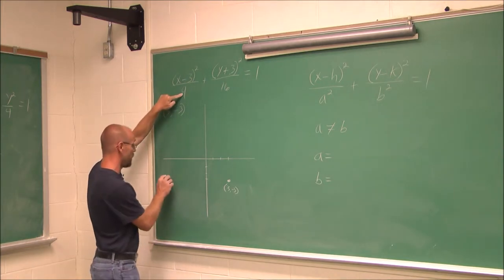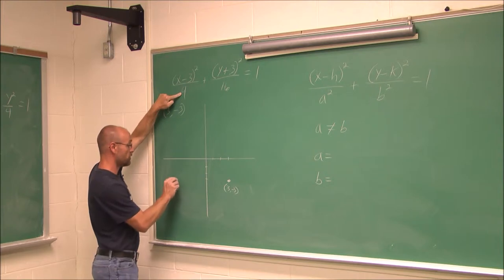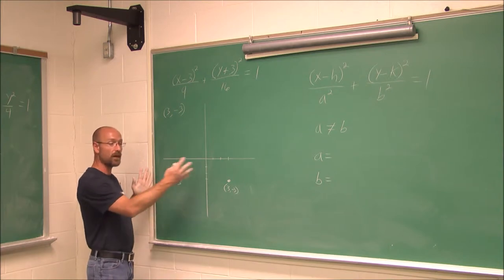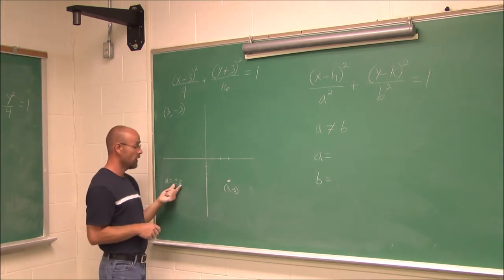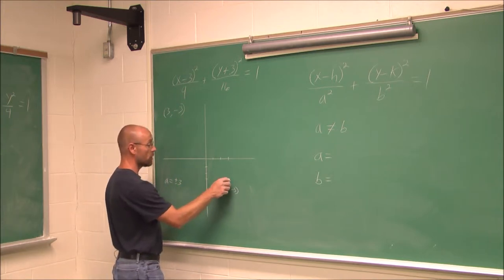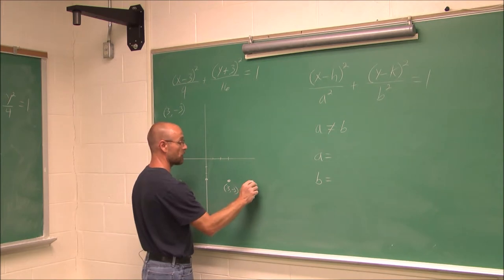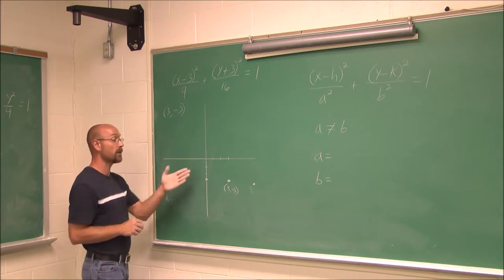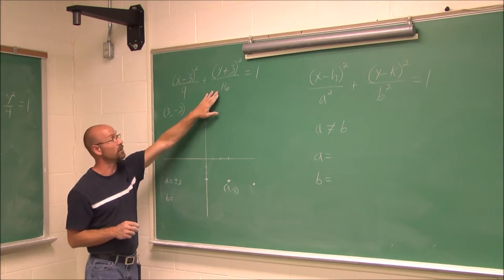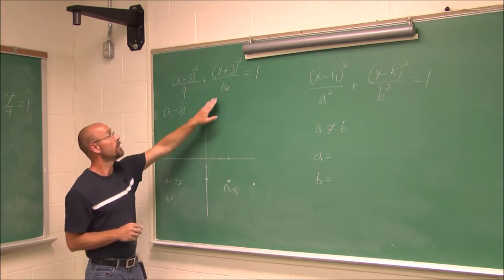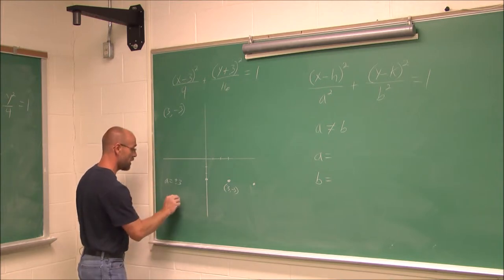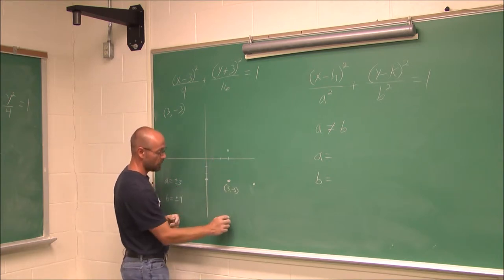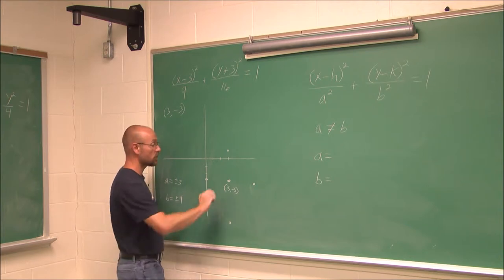From the center, I can use the a and b values to determine those points — they're no longer intercepts because it's not centered at the origin. The a value: what value squared gives me 9? Plus or minus 3. Because this is an x value, it deals with horizontal movement, so from the center I go 3 to the right and 3 to the left. For b, the square root of 16 gives plus or minus 4, so I go up 4 and down 4 from the center. Now I'm ready to draw this ellipse.